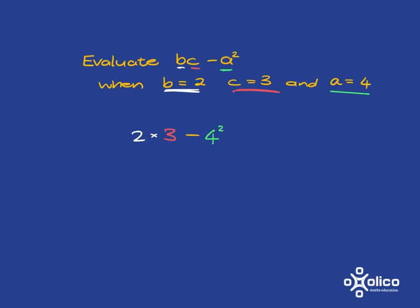2 times 3 is 6, and 6 minus 4 squared is 16. So we've got 6 subtract 16. And that's going to get us to the answer of negative 10.